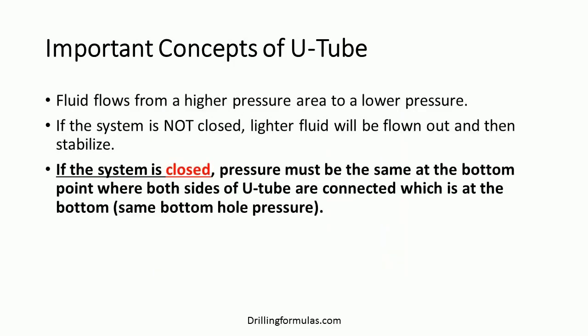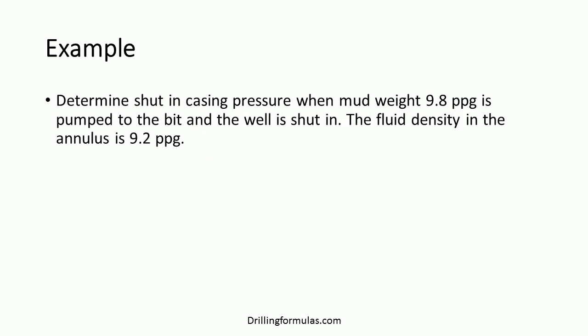The last concept: if the system is closed, pressure must be the same at the bottom point where both sides of the U-tube are connected. For example, determine the shut-in casing pressure when mud weight 9.8 ppg is pumped to the bit and the well is shut in. The fluid density in the annulus is 9.2 ppg.